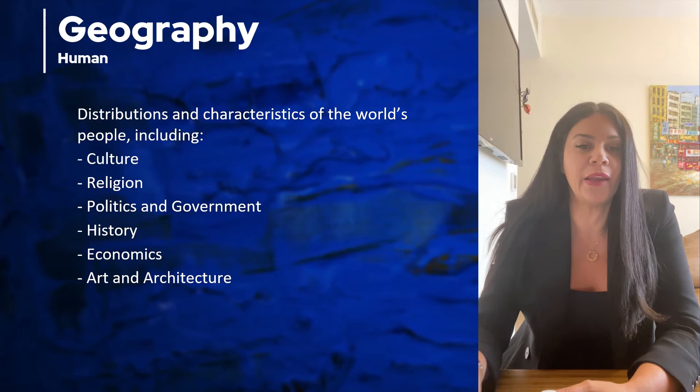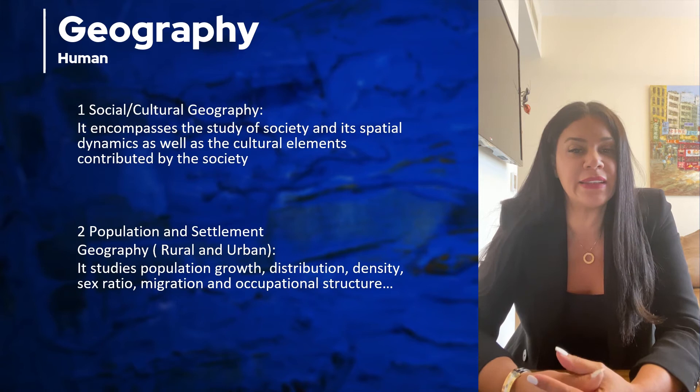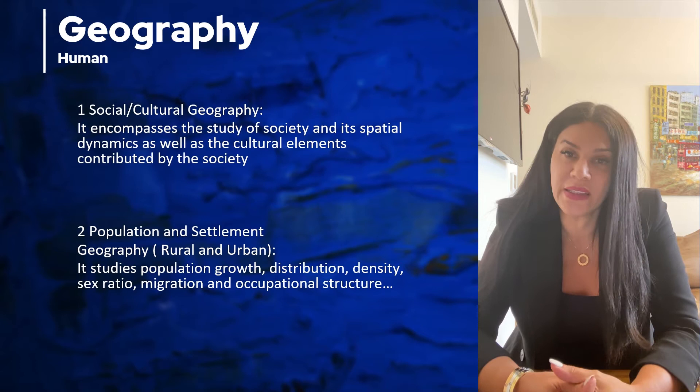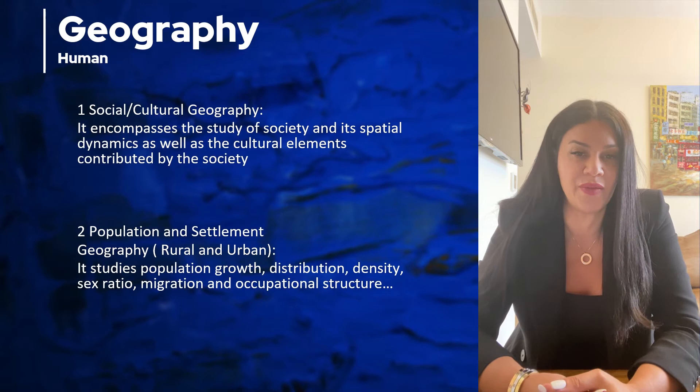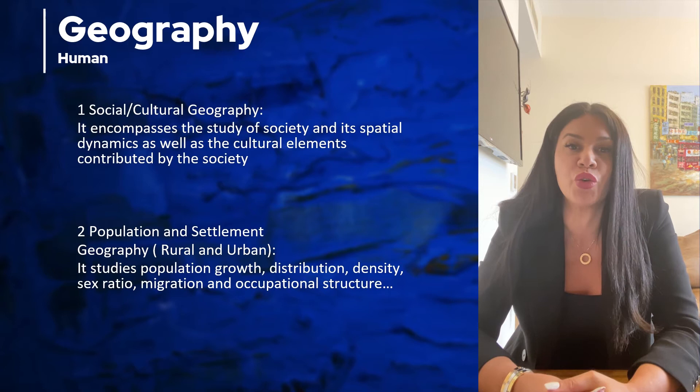In human geography, we have mostly five sub-branches. The first one is social or cultural geography. As the name says, it deals with culture and cultural or social events of a society — how the society of Greece behaves, how the society of China behaves, how the society of India behaves, what is the culture of America, what is the culture of China. These are all studied by the topic social or cultural geography.